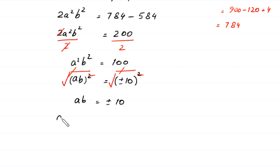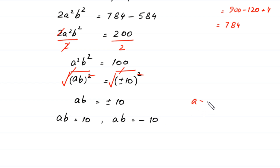From here, ab = 10 or ab = −10. Because a > 0 and b > 0, we reject the negative value −10. So the value of ab is 10.